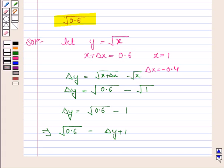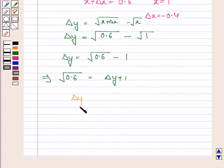Now delta y is approximately equal to dy and dy is equal to dy by dx into delta x. Now dy by dx is 1 by 2 into x to the power minus 1 by 2 into delta x.